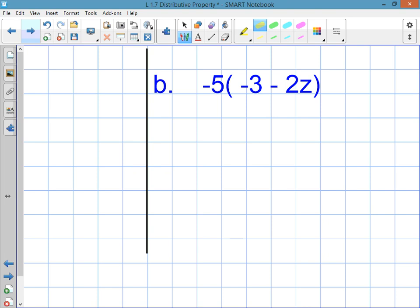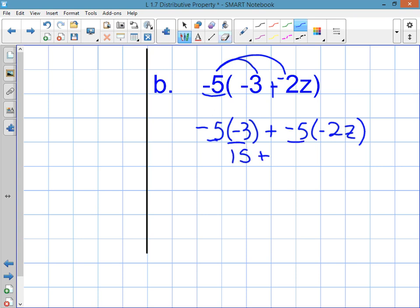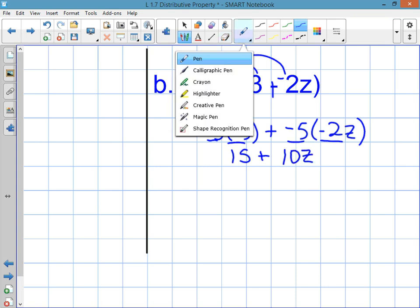Okay, second part of example 3, part b. Same situation. Outside of the parentheses you have a negative. Only this time it's a negative number. On the inside you have a minus. So I'm going to change that to add the opposite. Add the opposite. And then you're going to distribute the negative 5 to the negative 3 and the negative 5 to the negative 2z. Write it out. Negative 5 times negative 3 plus negative 5 times negative 2z. When you multiply negative 5 times negative 3, a negative times a negative is a positive. So that's 15. Plus negative 5 times negative 2z. A negative times a negative is a positive. So that's positive 10z. And that's it. That's your answer.